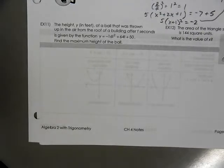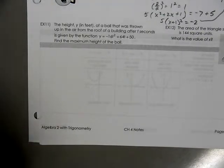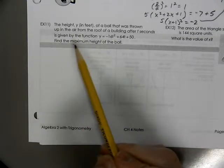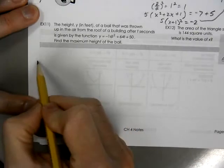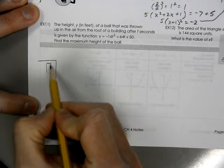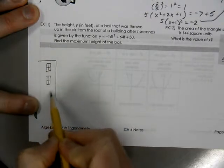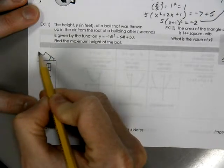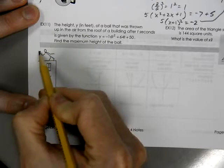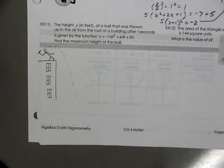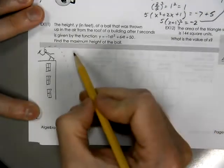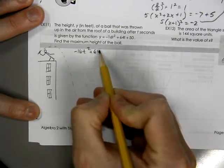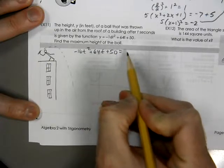Here we're going to use the process of completing the square to answer the question. We have the height of a ball that was thrown up in the air after t seconds. And it's given by this function. Find the maximum height of the ball. So we have a building. We have some person that's about to throw an object. And we're going to take the negative 16t squared, negative 16t squared, plus 64t, plus 50, equal it to 0.